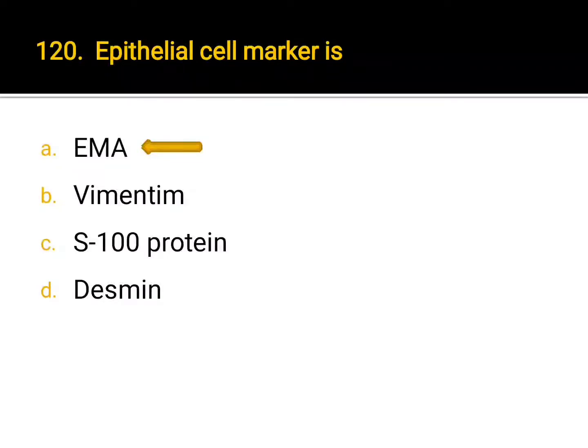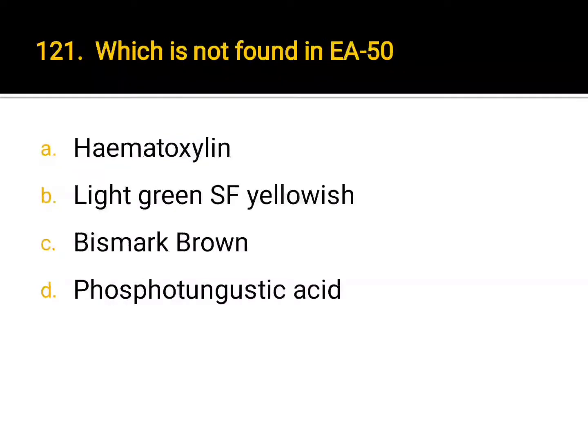Which is not found in Masson's stain? A. hematoxylin, B. light green and acetic acid, C. ponceau red, D. phosphotungstic acid. Correct answer: A. Hematoxylin.